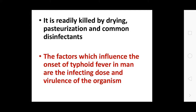S. typhi is rapidly killed by drying, pasteurization, and common disinfection. The factors which influence the onset of typhoid in people include the virulence of the organism and the infecting dose.